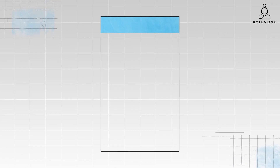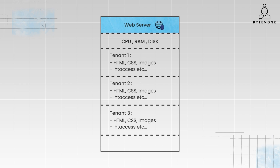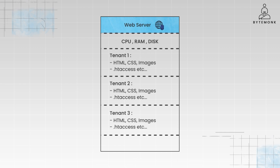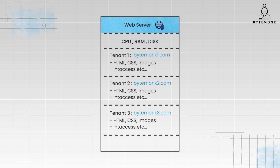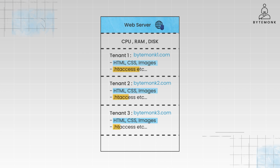Also, a single web server can host multiple websites or tenants, each website having its own files and configurations, but they all share the server's resources. In this multi-tenant setup, the web server is the central entity providing computational resources such as CPU, memory, RAM, and storage disk. Tenants are the multiple websites residing on the same server. Each tenant has its own dedicated space on the server for storing its website files — such as HTML, CSS, images, etc. — and configuration files such as .htaccess. This ensures that one tenant's data and settings don't interfere with another's.